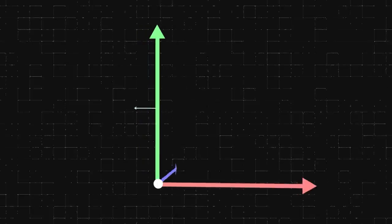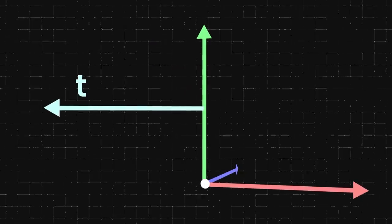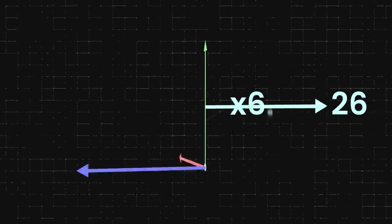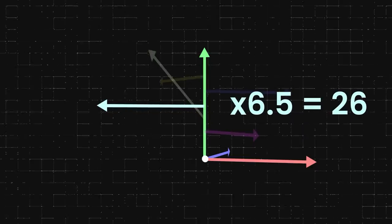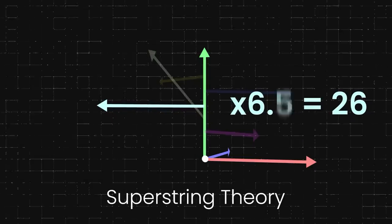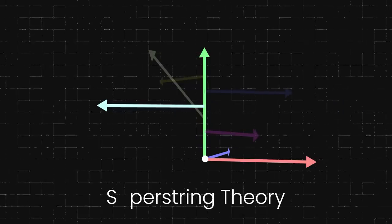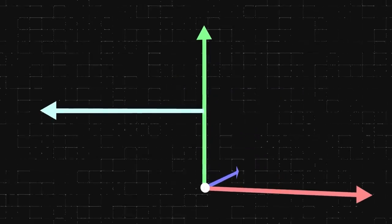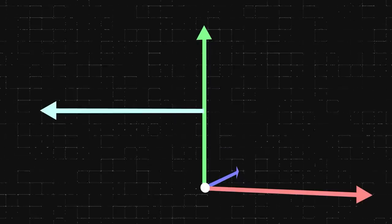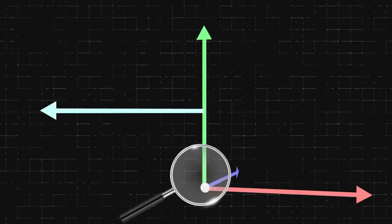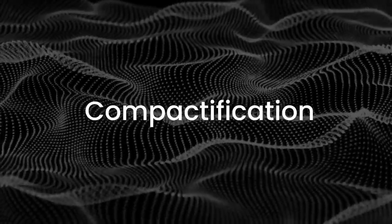We think our universe consists of three dimensions of space and one dimension of time. But for string theory to work, we have to assume there are 26 dimensions, although a more complete superstring theory cuts down the dimensions from 26 to 10. But even then, there are three dimensions of space and one of time. So if these six additional hidden dimensions exist, where should we look for them? One idea is that they are undetectable to us because of the process called compactification, meaning these dimensions are tightly curled up on themselves.